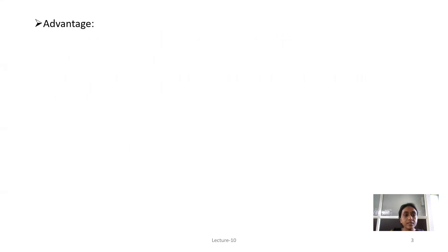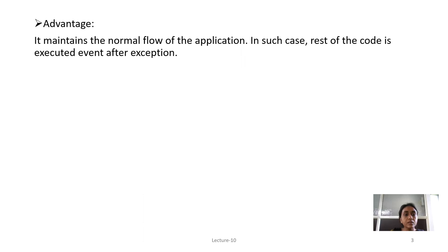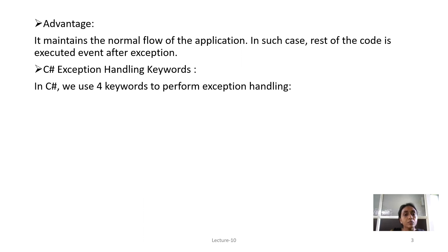Its advantages are: it maintains the normal flow of the application. In such case, the rest of the code is executed even after an Exception. C-Sharp Exception Handling keywords are 4: 1st Try, 2nd Catch, 3rd Finally, and 4th Throw.